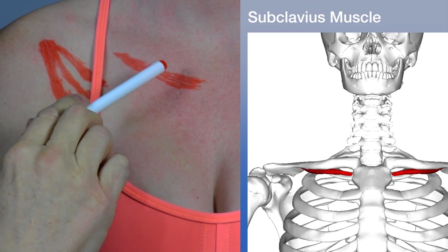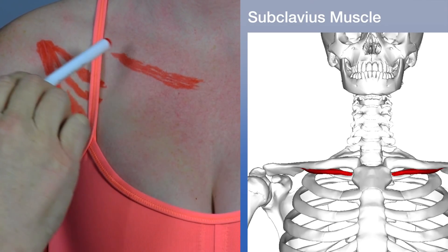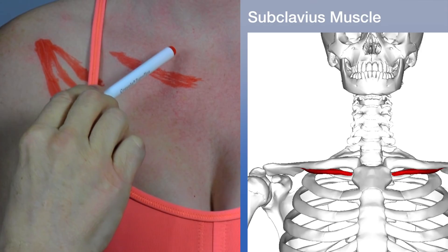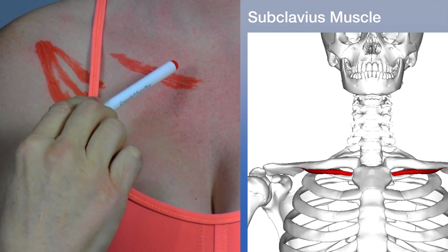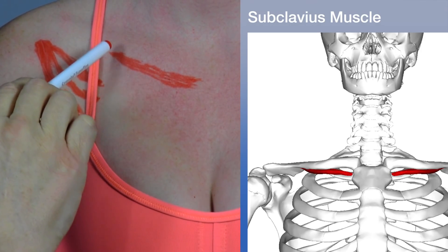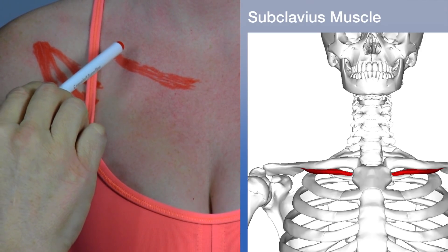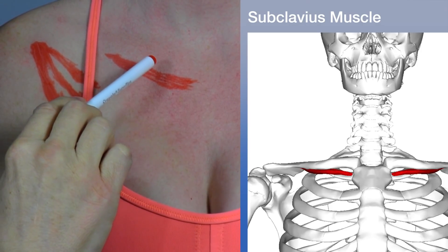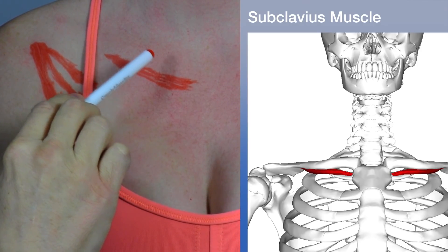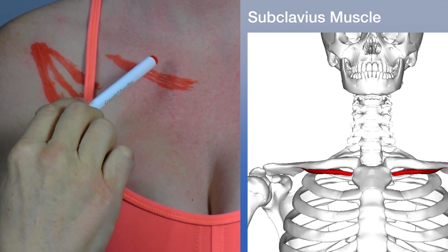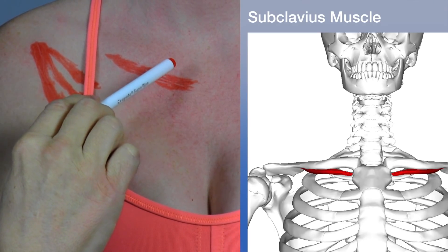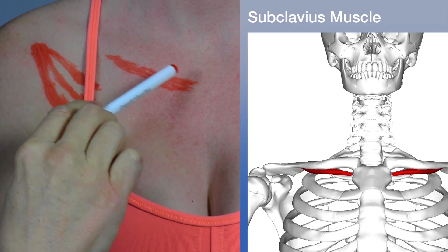Next is a very small muscle right underneath the clavicle called the subclavius. The subclavius runs from the first rib and its cartilage to the underside of the clavicle, and its action is to depress the clavicle.